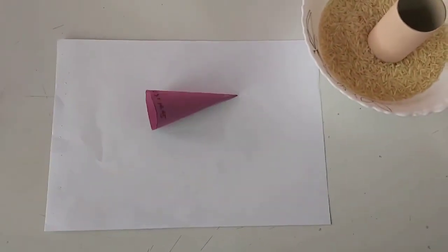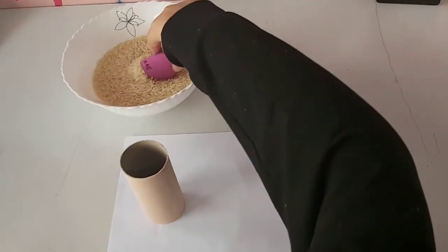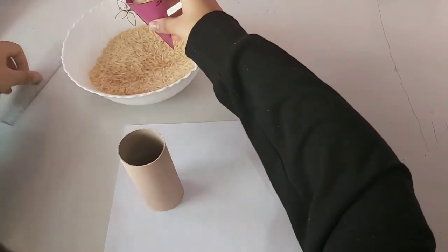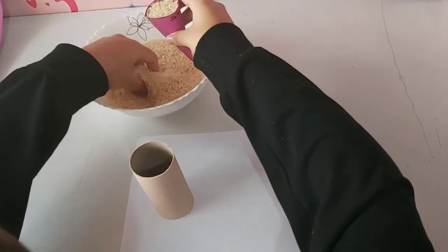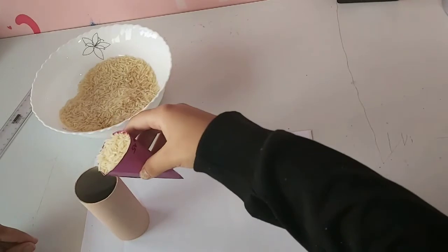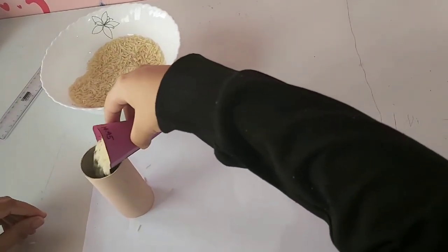Now that we have our cone, take some rice or sand to help fill the cylinder. Start filling the cone with rice and pouring it into the cylinder. You will see that 3 full cones will fill up the cylinder.